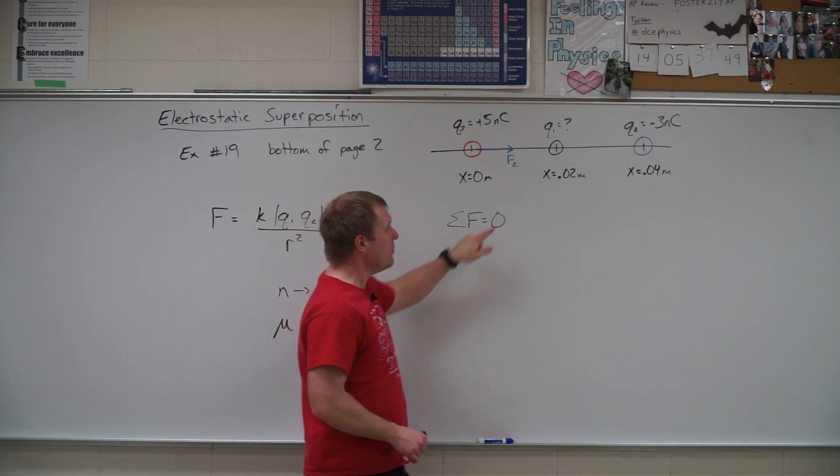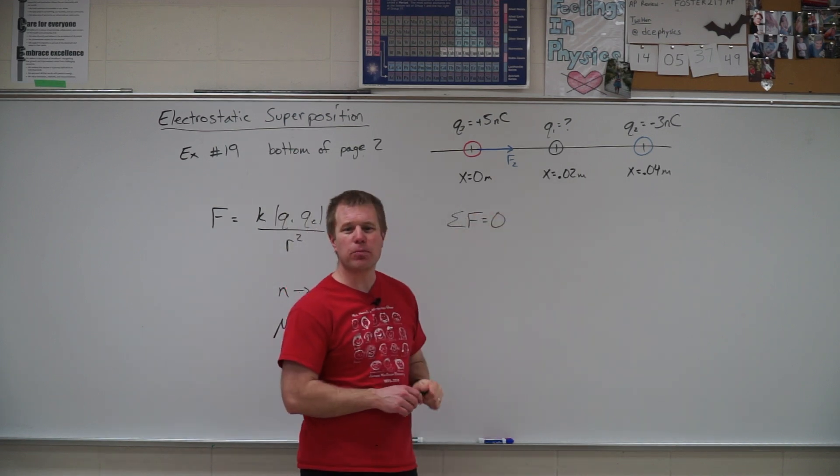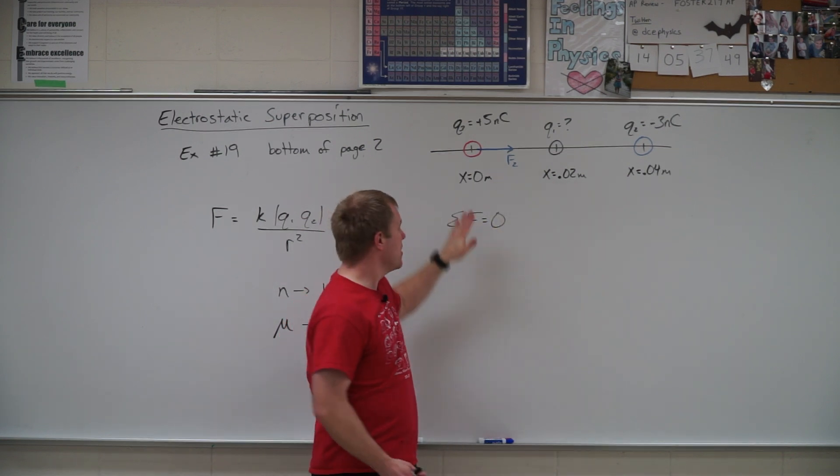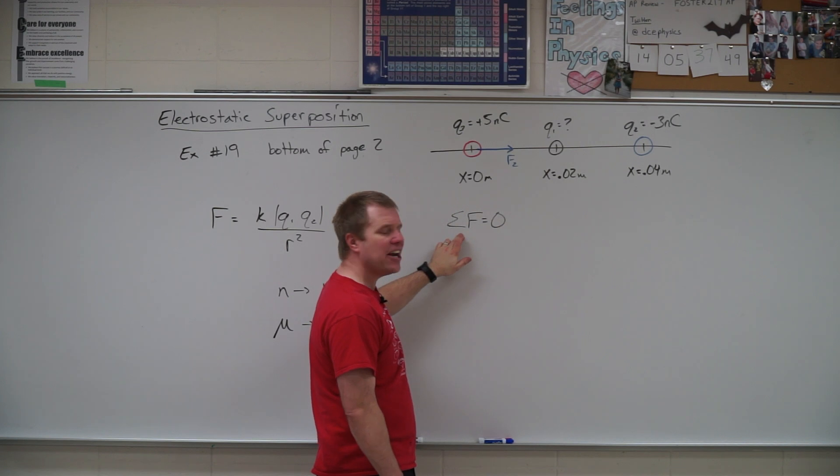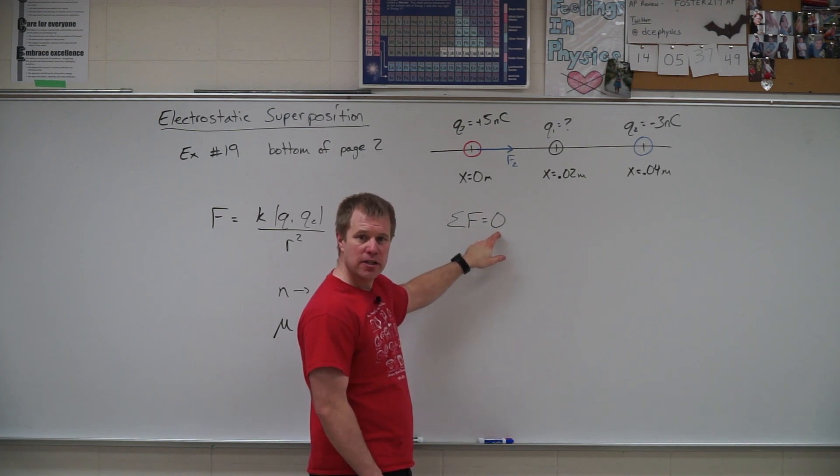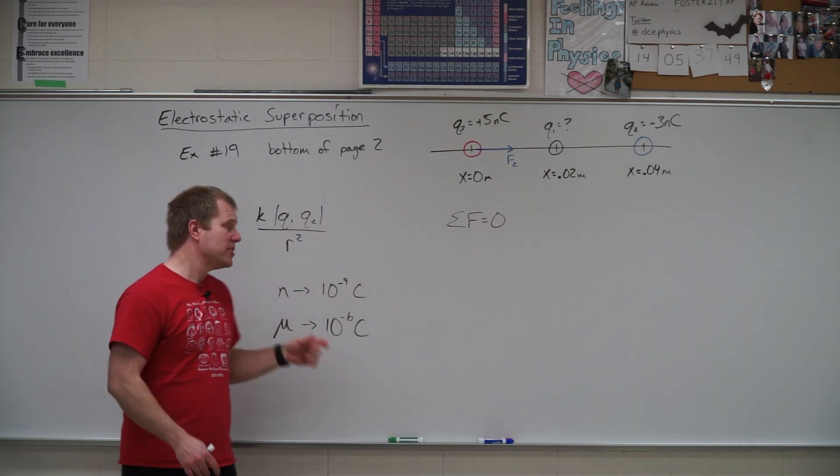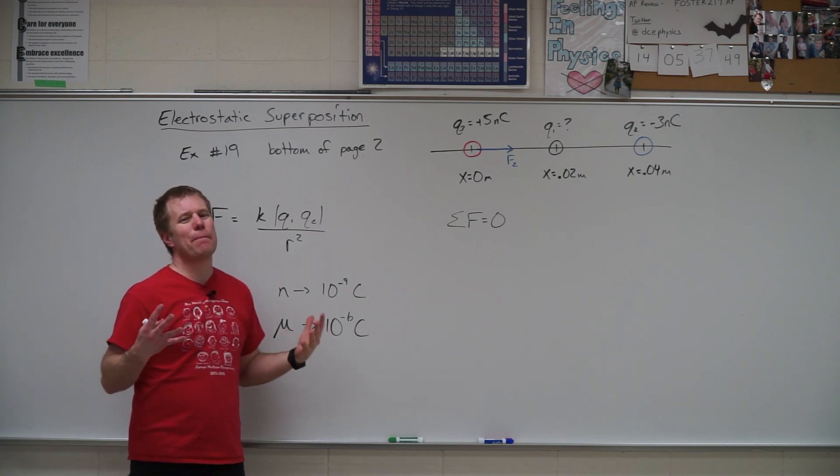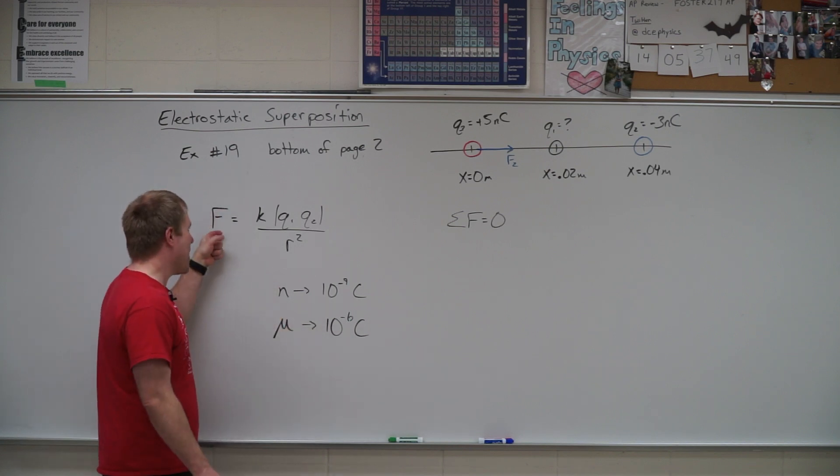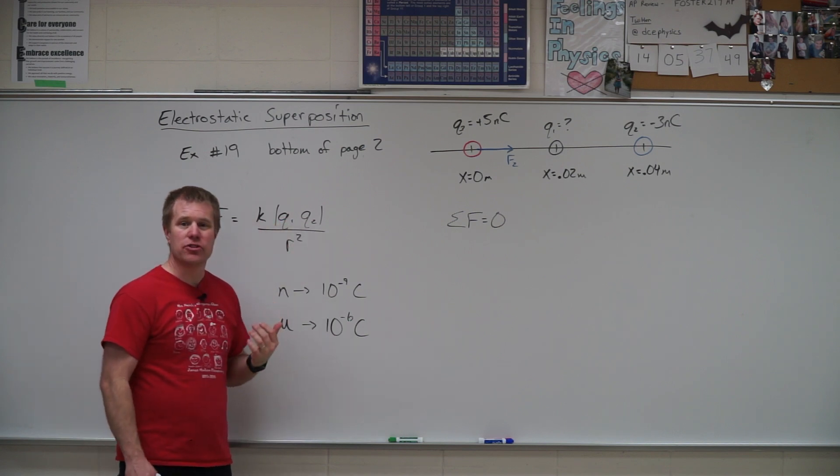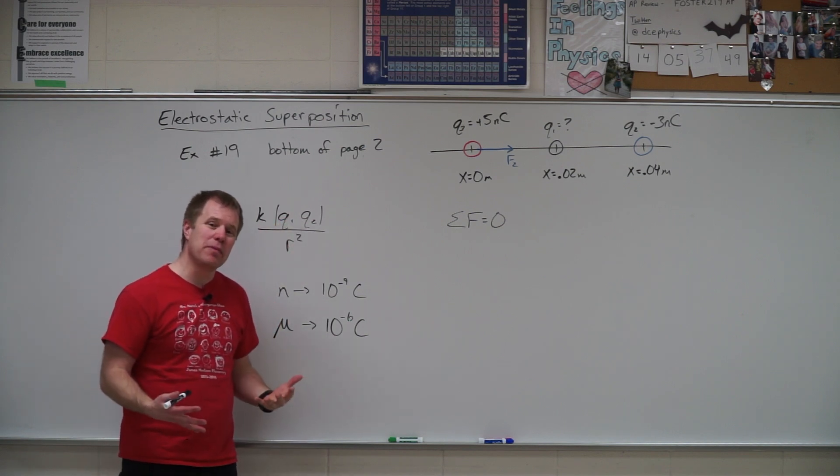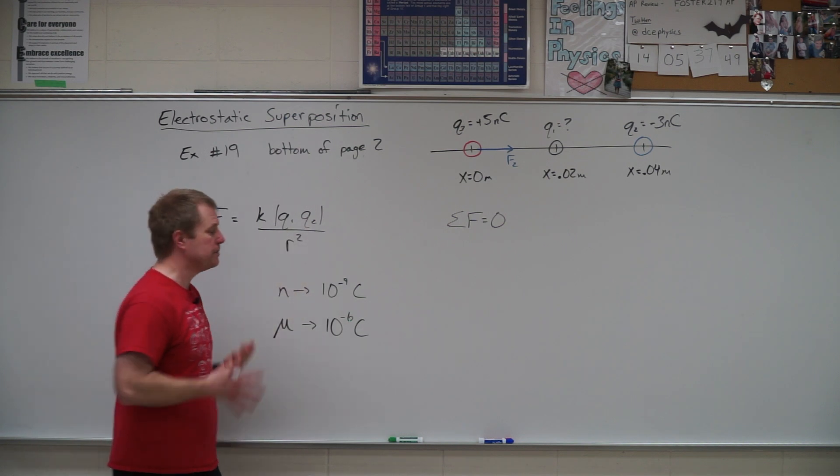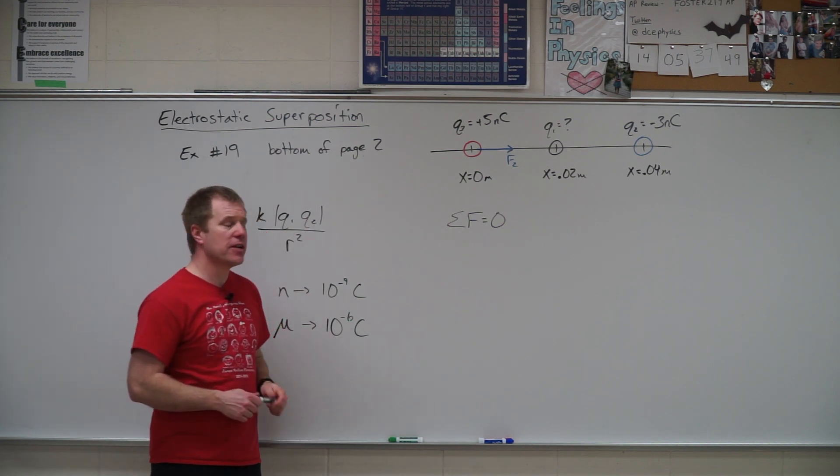And wants to know what charge do I need to place at x equals 0.02 meters such that this one will have a net force on it of zero. So thinking back to when we started this equation, this equation tells us about the magnitudes of things like the magnitude of the force or the magnitude of the charge. It doesn't tell me about the sign on the charge or the direction of the force.